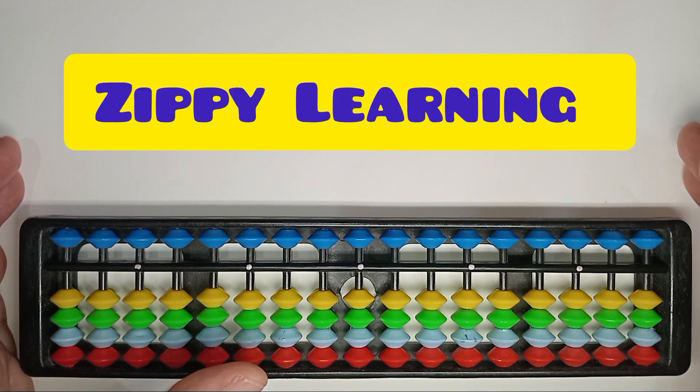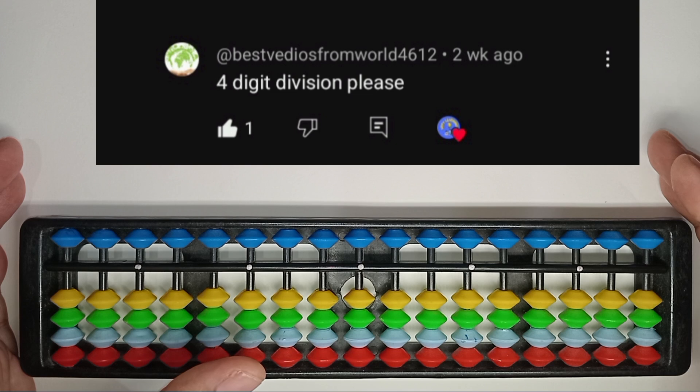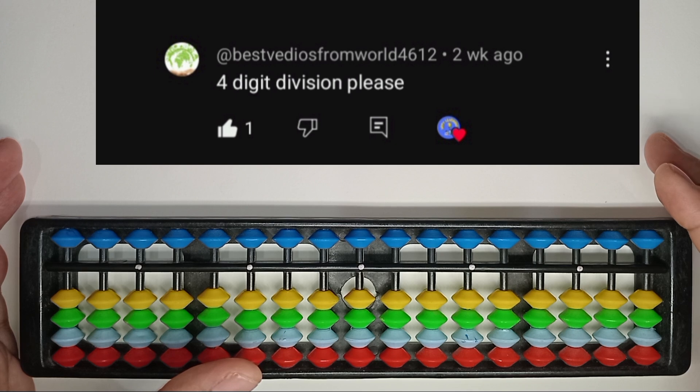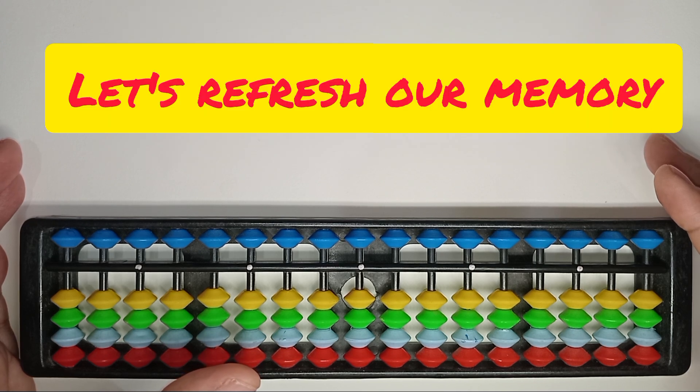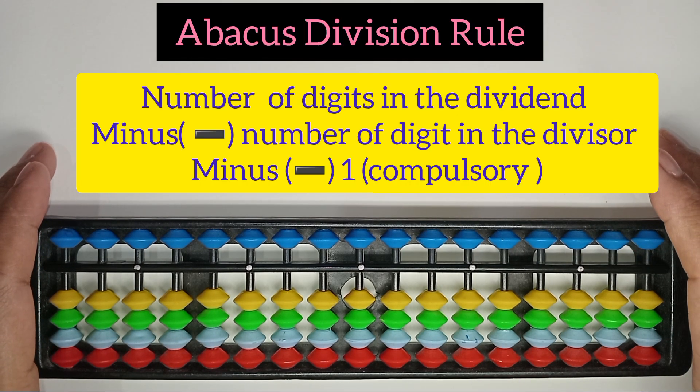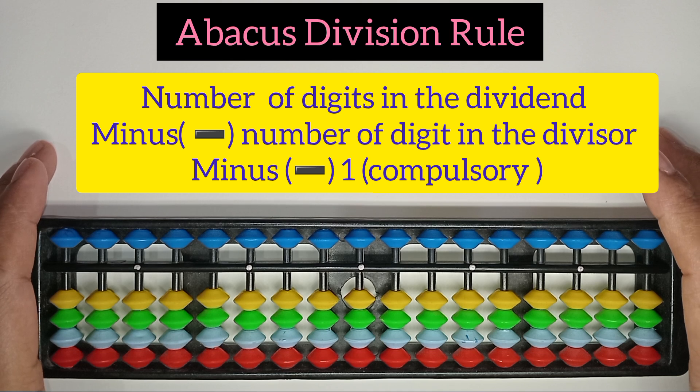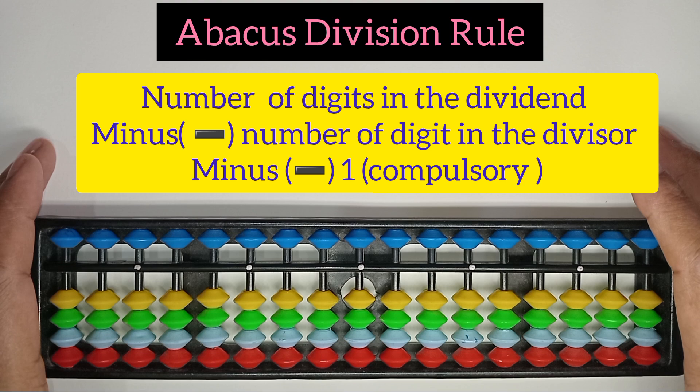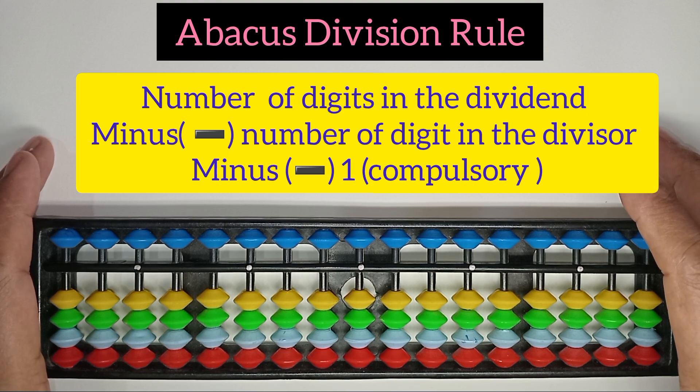Hello my dear friends, welcome back to Zipi Learning. I am so excited to bring you a special lesson based on a request to make a tutorial on 4-digit division from one of our amazing learners. So let's begin by refreshing our memory on the basics of Abacus division. Abacus division rule says number of digits in the dividend minus number of digits in the divisor minus 1, which is compulsory. The answer we will get will be the place from where we will start placing the sum or the dividend.